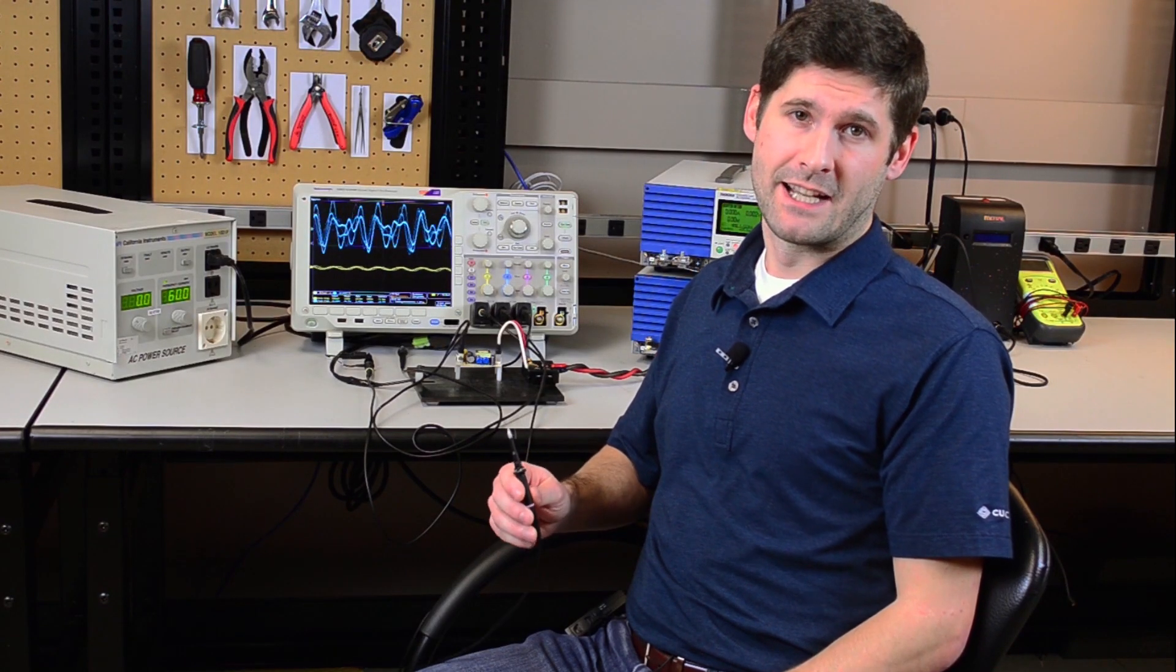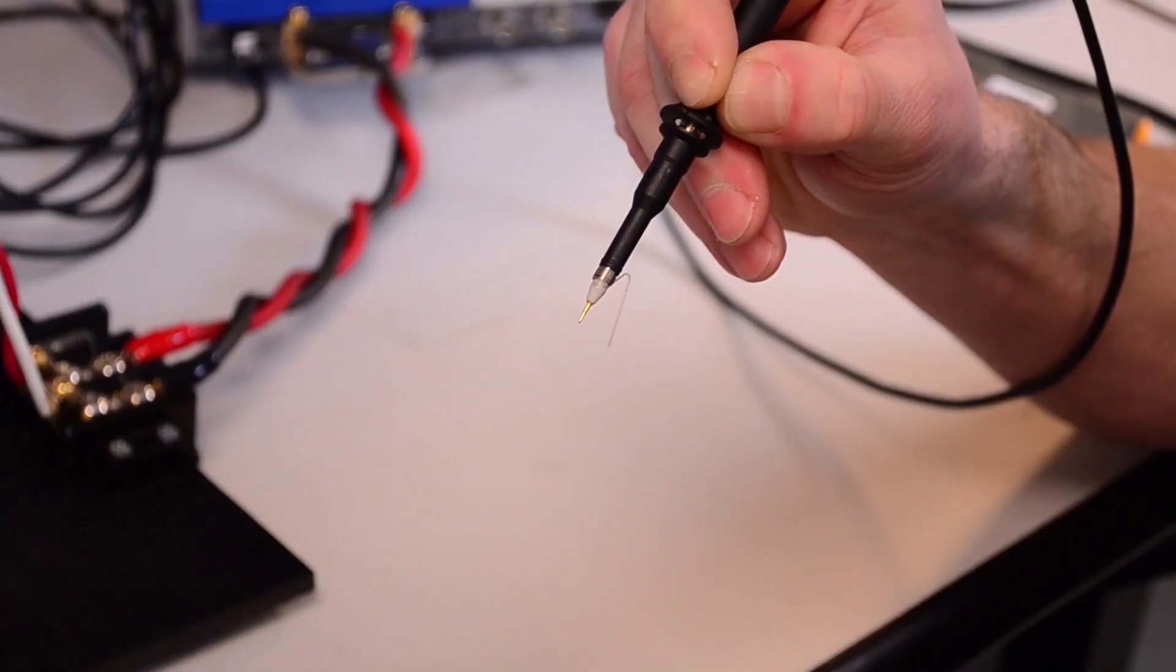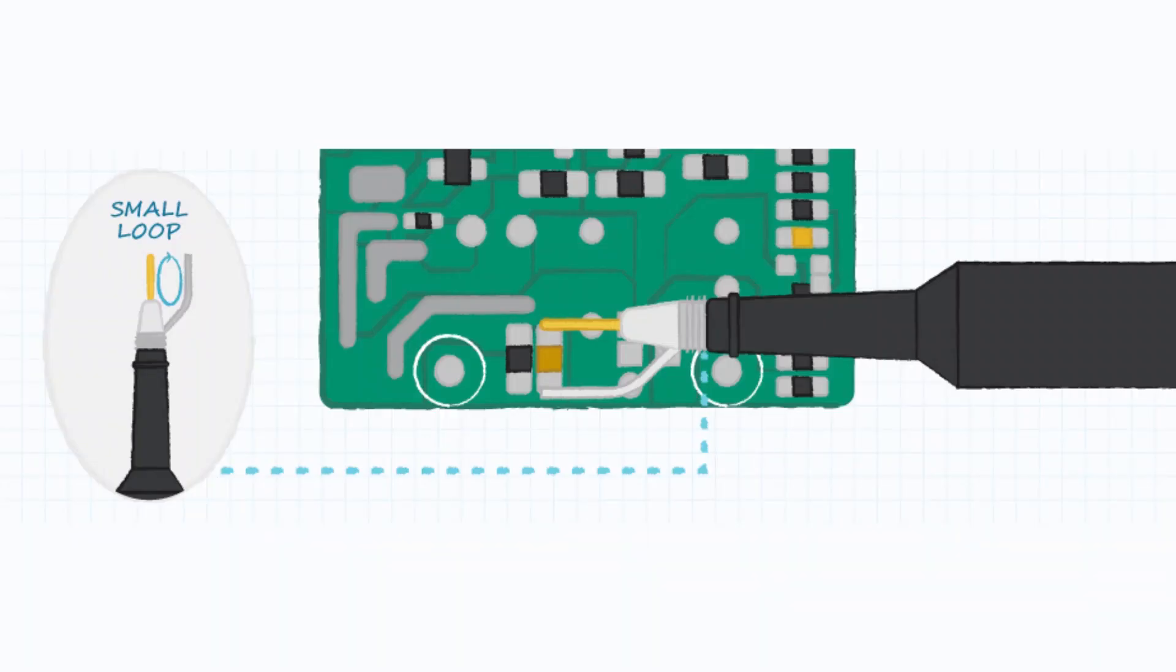One acceptable probing technique, that we call the paperclip method, wraps a wire around the ground connection with a lead coming out close to the tip to minimize the loop area.